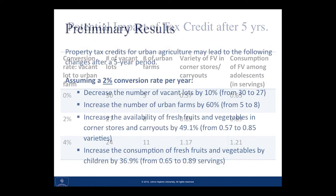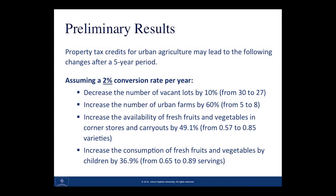This slide presents the preliminary results in more detail. Assuming a 2% conversion rate per year, we predict a decrease in the number of vacant lots by about 10%, from 30 to 27. We predict an increase in the number of urban farms by 60%, from 5 to 8. The model predicts an increase in the availability of fresh fruits and vegetables in corner stores and carryouts by close to 50%. We also predict an increase in the consumption of fresh fruits and vegetables by children by about a third.